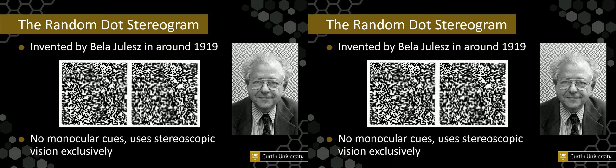The advantage of this approach is it provides no monocular cues. As set up here, it does require you to free-view it, but the same left and right image pair can be presented to any stereoscopic display, as I'll show you in a few minutes. It uses stereoscopic vision exclusively, and as a result, it tests the presence of stereoscopy exclusively.